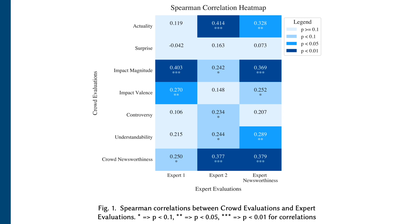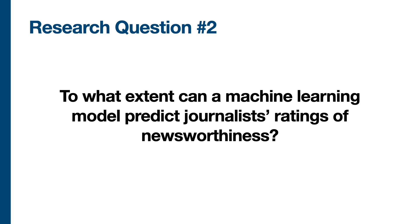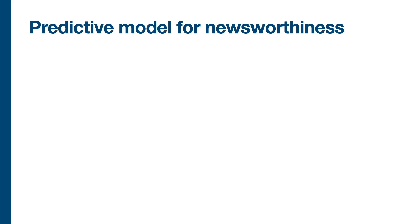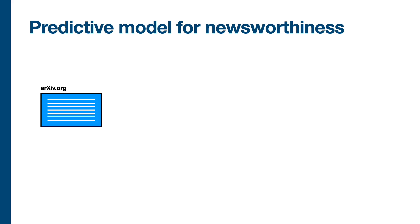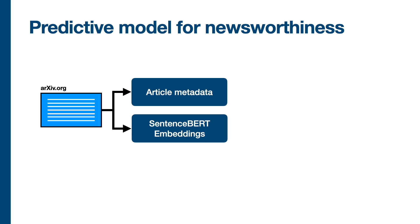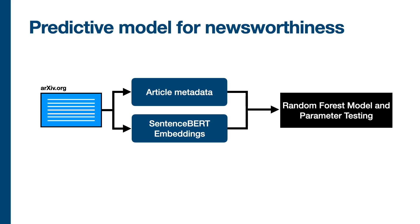Based on these insights, we design a predictive model for newsworthiness trained on the crowd ratings. We then set out to answer the second research question: to what extent can a machine learning model predict journalist ratings of newsworthiness? To build the predictive model, we pick individual articles from arXiv and use those to generate a set of features. The first kind pertains to article metadata, such as the primary category and whether it makes code freely available. The second kind relates to the text of the article itself, which we convert into sentence-BERT embeddings. We feed both feature types into a random forest model and conduct iterative parameter testing to find the best hyperparameters, ultimately outputting a predicted newsworthiness for each arXiv article.